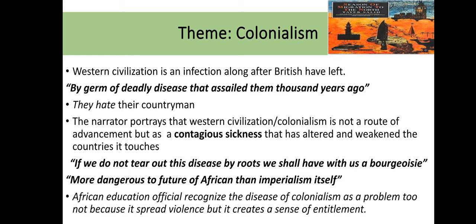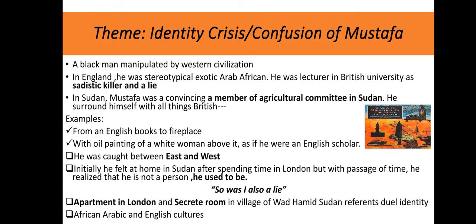The theme of colonialism continues: Western civilization is described as an infection. Long after the British have left, the deadly germ they spread thousands of years ago remains, causing people to hate their own countrymen and consider their own people inferior. We can conclude by contrasting two places: Mustafa's apartment in London, which reflects his roots with Eastern culture, and the secret room in the village of Wad Hamid, which reflects his connection with English norms, values, and traditions through oil paintings, pictures of English women, and a fireplace — all symbols of Western civilization. He was caught between two cultures: African-Arabic and English.